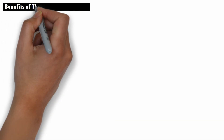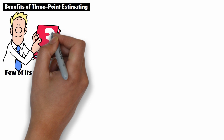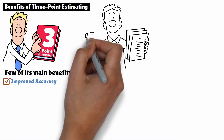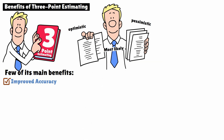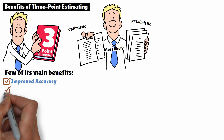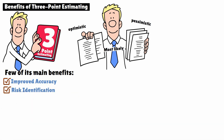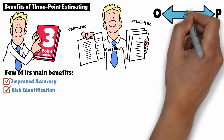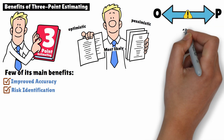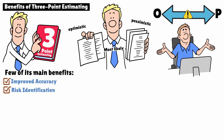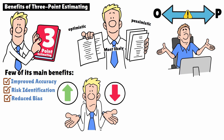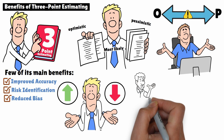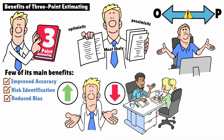Why is this technique so valuable? Let's cover a few of its main benefits. First, improved accuracy: by considering optimistic, pessimistic, and most likely outcomes, you get a more realistic estimate that's better suited for dealing with uncertainty. Second, risk identification: the range between the optimistic and pessimistic values gives insight into the level of risk — the wider the range, the more uncertain the task is likely to be. Third, reduced bias: this method forces you to think about both the best and worst-case scenarios, reducing the likelihood of overly optimistic or pessimistic estimates and helping create more balanced, unbiased project forecasts.